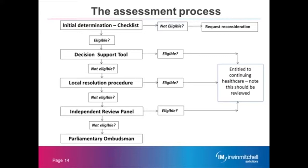The checklist will be a general assessment of the individual's health and care needs. I would like to point out that this list is included in a future slide in case anybody is taking additional notes. The assessor will look at the person's behaviour, cognition, psychological needs, communication, mobility, nutrition, continence, skin, breathing, medication and altered states of consciousness — for example, if somebody suffers with epilepsy. The assessment will also look at any other significant care needs that don't easily fit into those categories.